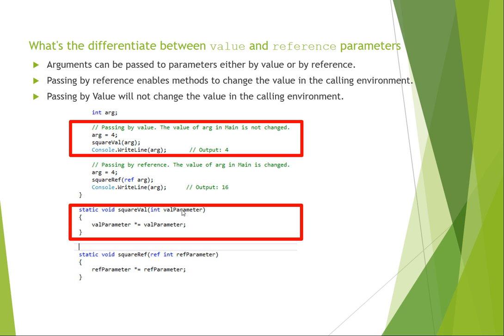And when we pass it by value, it basically takes that four, takes the four, multiplies by four, and then it assigns the val equal to 16, right? And you think it's going to pass 16 back.